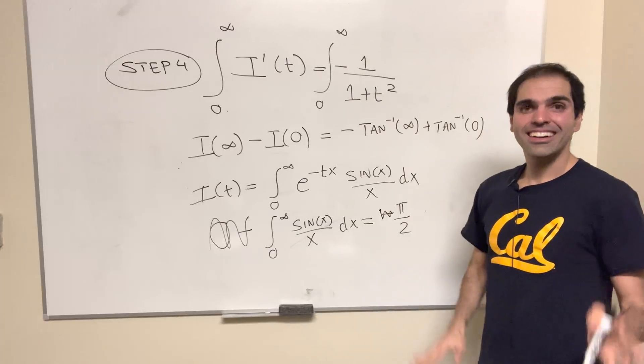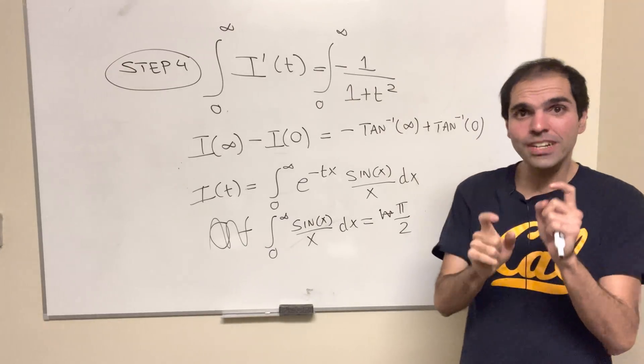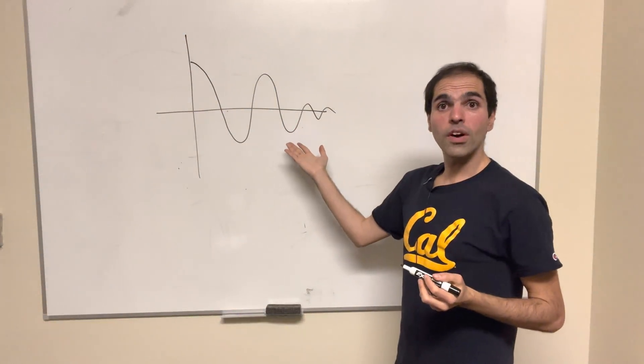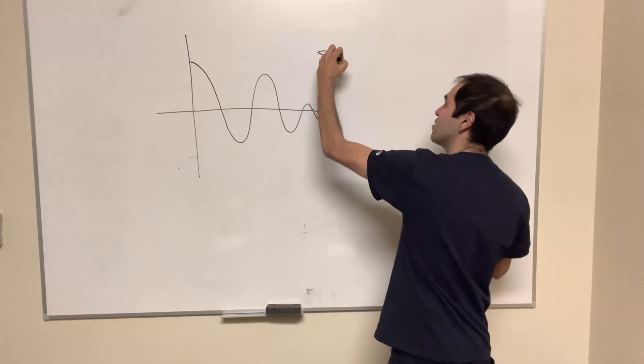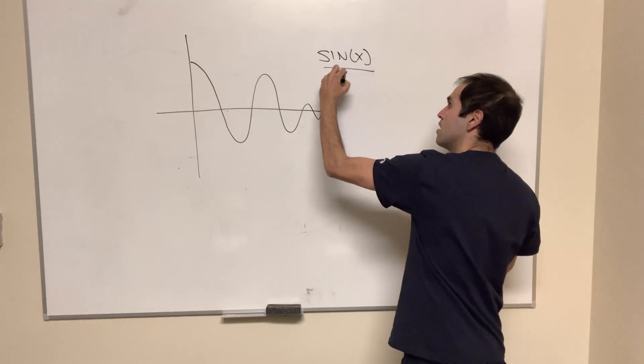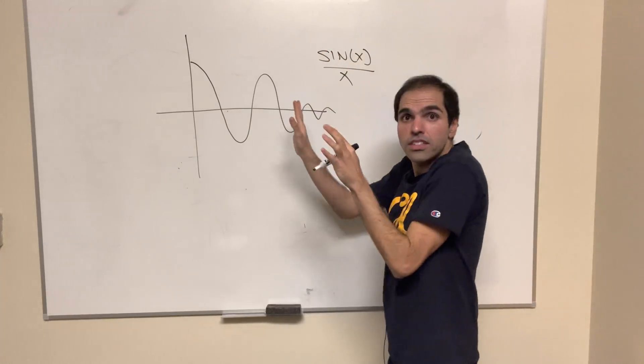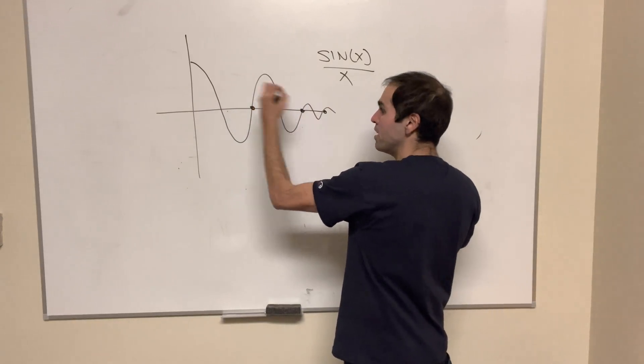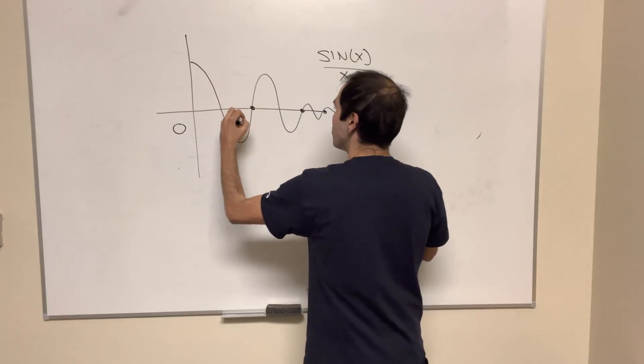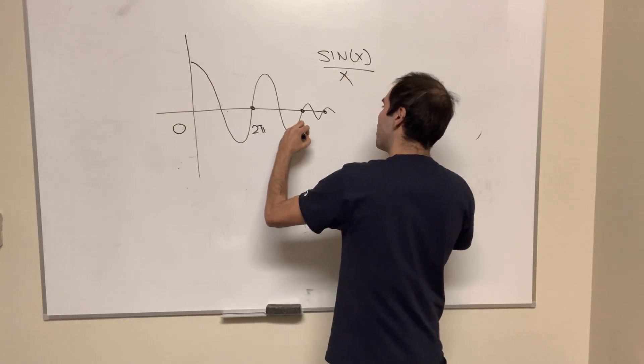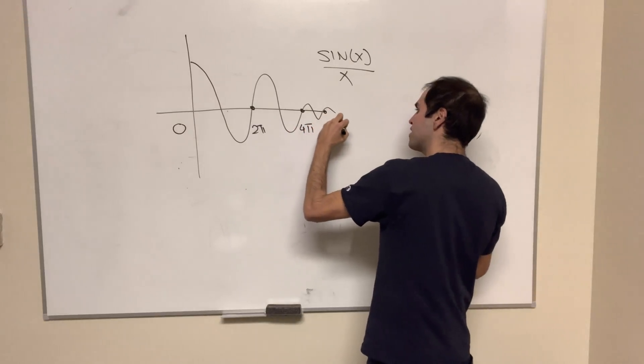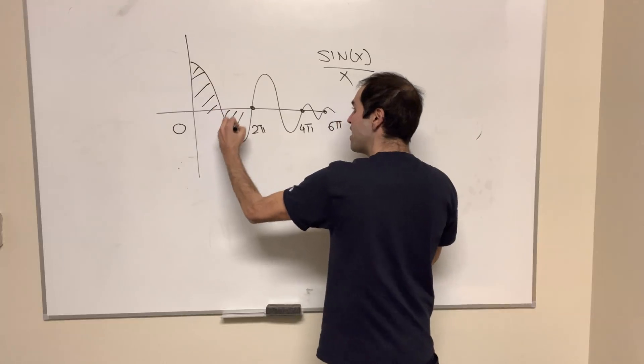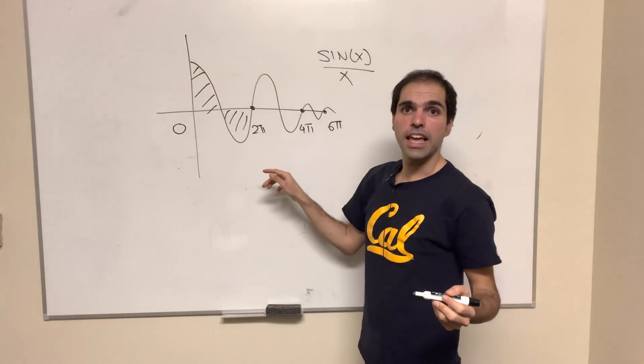I mean, how cool is that? You really have to appreciate the beauty of the problem, because what is going on here? We have this function sin(x)/x, and then, or I guess the generalized version, if you wish, and then what we did, we kind of split the integral up from 0 to 2π, 2π to 4π, 4π to 6π, and somehow...